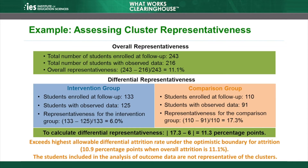First, let's assess overall representativeness. By applying the formulas for overall and differential attrition, we measure the unrepresentativeness of the individuals in the analytic sample of clusters. The denominator is 243, which is the number of students present in the clusters at follow-up. There are 216 students in the analytic sample, so the numerator is 243 minus 216, which is 27. Using the overall attrition formula, 27 divided by 243 is 11.1%.